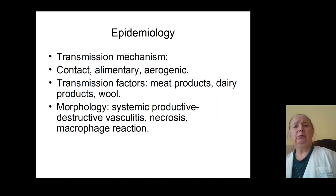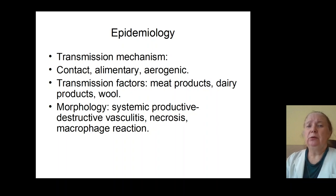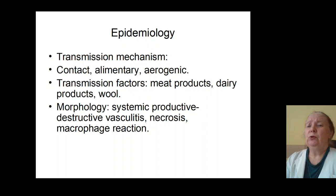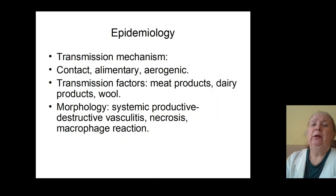Sources of infection are agricultural animals. Mechanisms of transmission include contact, plant, alimentary, and aerogenic routes. Factors of transmission include meat from animals, wool, milk, and milk products.